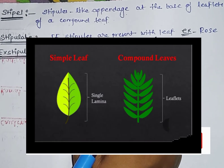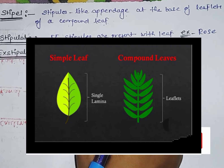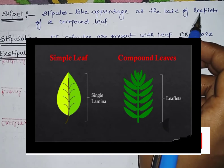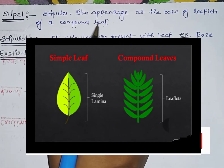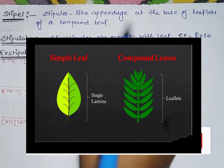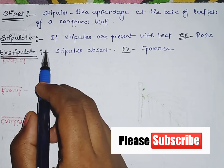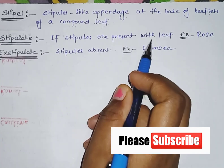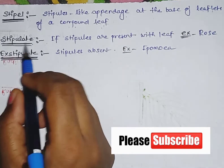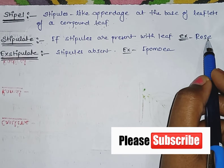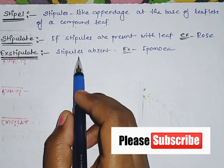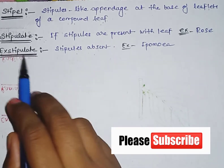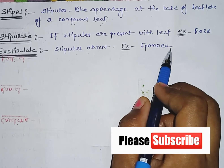A compound leaf is a big leaf divided into smaller leaflets, and stipels are present at the base of those leaflets. If stipules are present with leaves, we call it stipulate — for example, rose. If stipules are absent, we call it exstipulate — for example, Ipomoea.